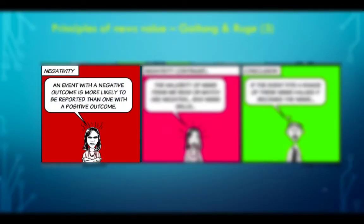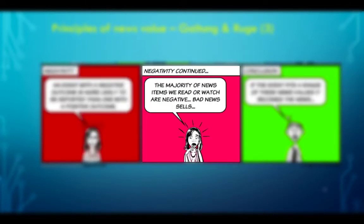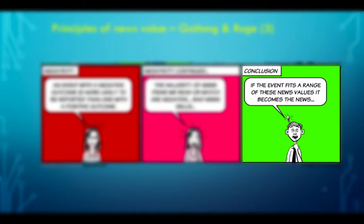Negativity. An event with a negative outcome is more likely to be reported than one with a positive outcome. This is one of the biggest criticisms of news, because most news items are negative. Bad news sells, and this is the reason why we have a lot of bad news — because people want to know what things are bad and what is coming in their direction. So what is the conclusion? If the event fits a range of these news values, it becomes the news.